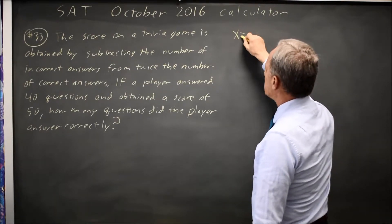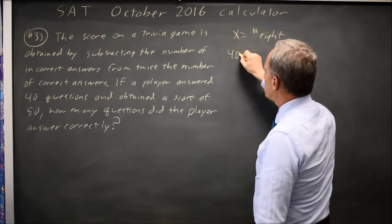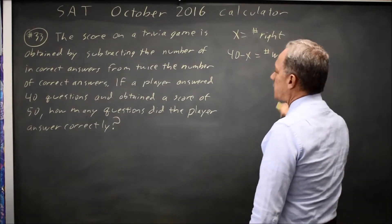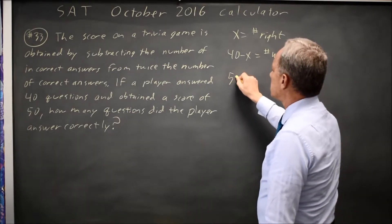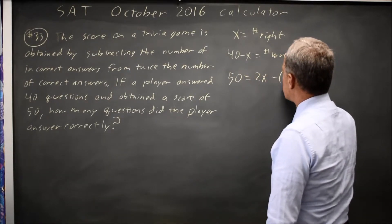Let's say x equals number right. If he got x right, then 40 minus x is number wrong. And his total points, 50, will equal twice the number right minus the number wrong.